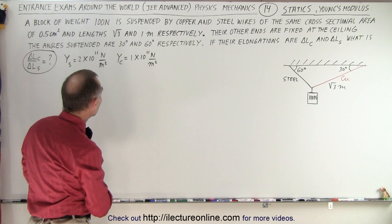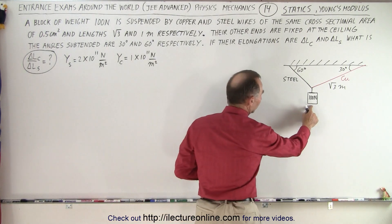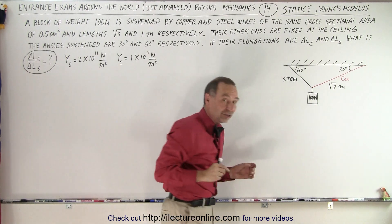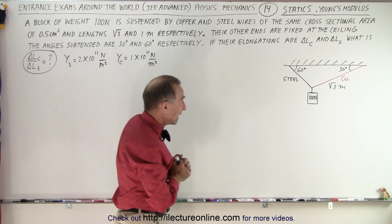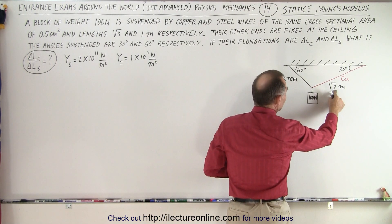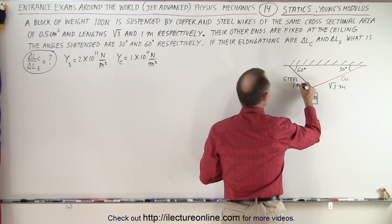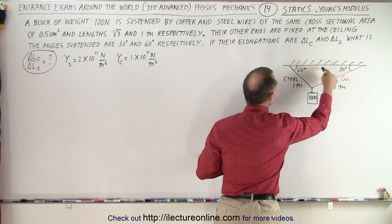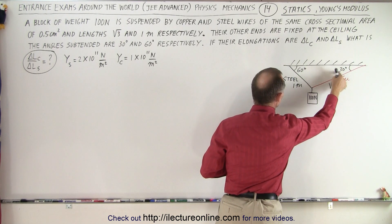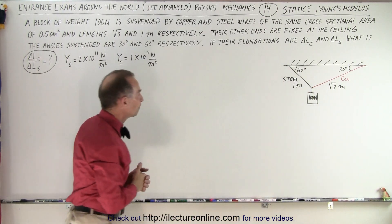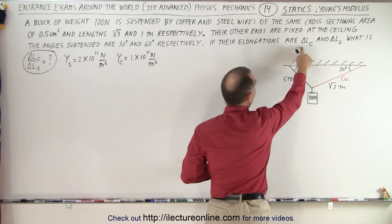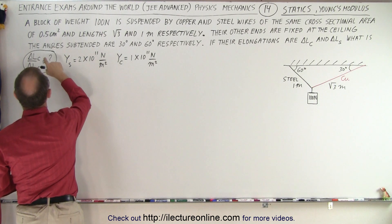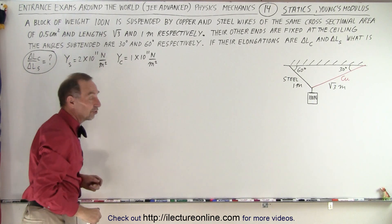A block of weight 100 Newtons is suspended by copper and steel wires — so 100 Newtons suspended by two wires, one made of copper, one made of steel. They have the same cross-sectional area. The length of the copper wire is the square root of three meters, and the length of the steel wire is one meter. They're attached to the ceiling, and the angles made between the wires and the ceiling are 30 degrees for copper and 60 degrees for steel. If the elongations of the wires are defined by delta L_C and delta L_S, then what is the ratio of the change in length of the copper wire to the change in length of the steel wire?